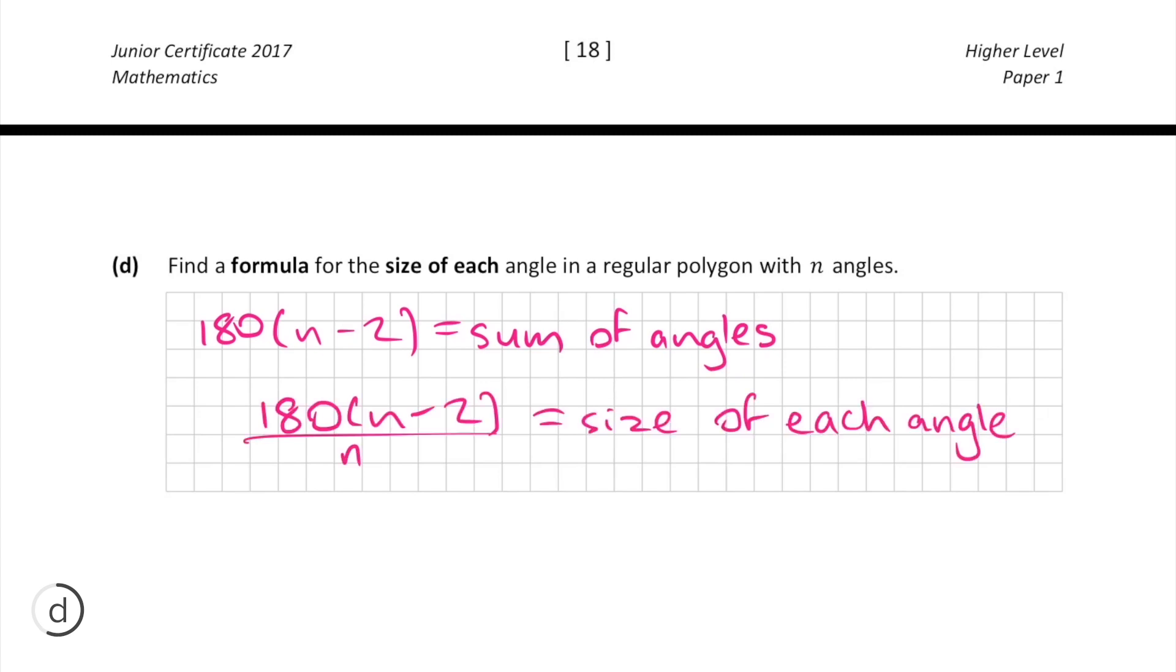As a result we can write the formula for the size of each angle as 180 by n minus 2 divided by n. In other words we divide the sum by the number of angles. And that's the end of the question which is worth another five marks.